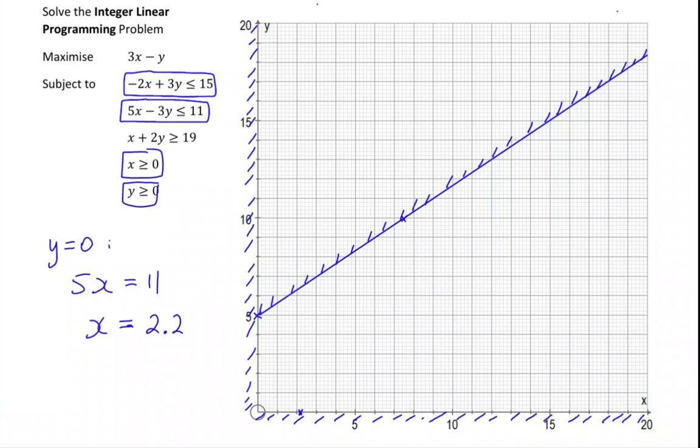I'm going to need another point. How about if x is 10? If x is 10 we're going to get 50 take away 3y is equal to 11. So that means that 3y is going to have to be equal to 39, so y is going to have to be equal to 13. We've got 10, 13 as a point. So 10, 13 would be there.